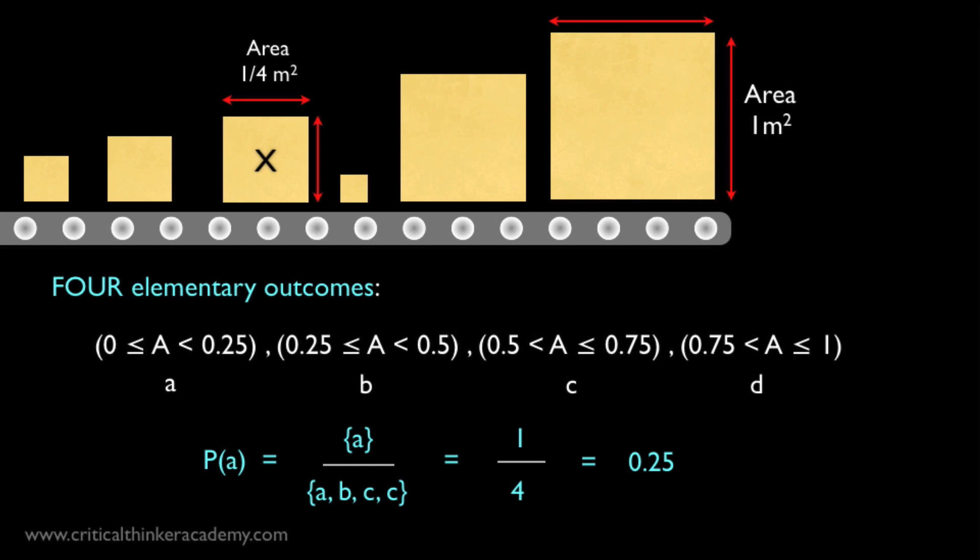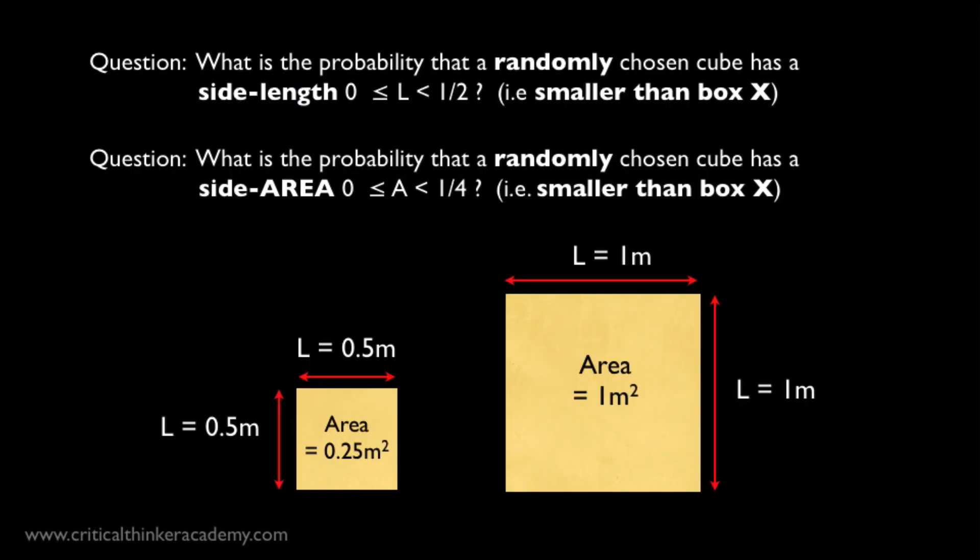So I hope that's clear enough. In the diagram, I've just labeled the outcomes A, B, C, and D to help make the point, since all we're doing is calculating the ratio of the number of favorable outcomes to the total number of possible outcomes. Now here's the point. I want you to see that these two questions, one, what is the probability of randomly choosing a cube with side length between 0 and 1 half a meter? And two, what is the probability of randomly choosing a cube with face area between 0 and 1 quarter square meters? These two questions are asking for the probability of the same event.